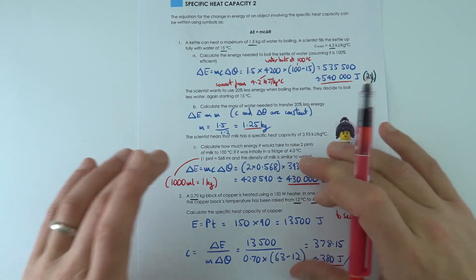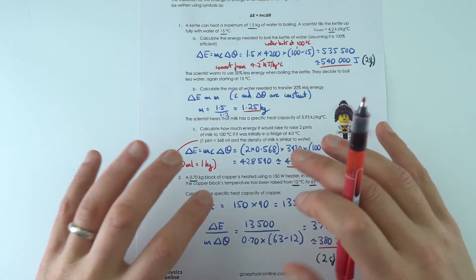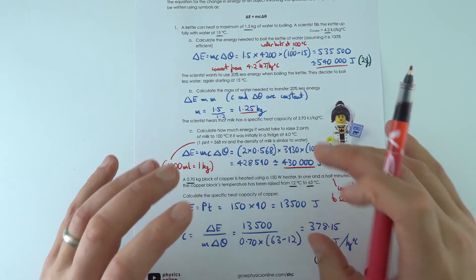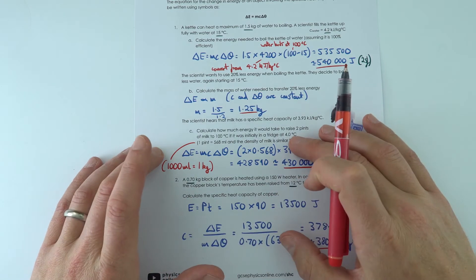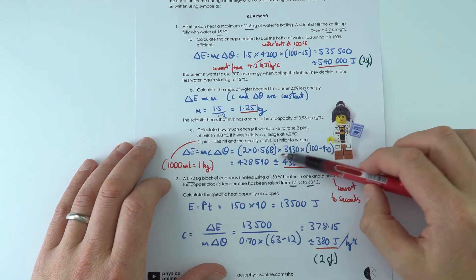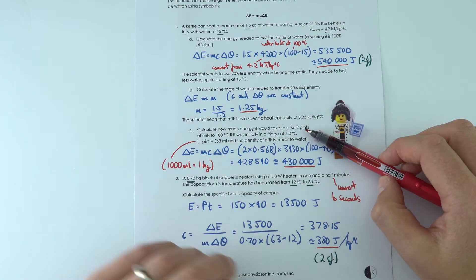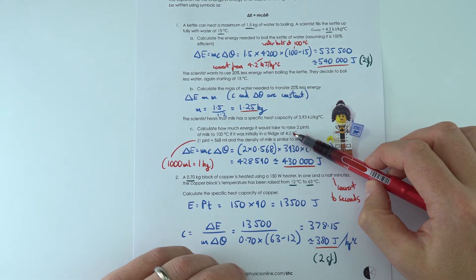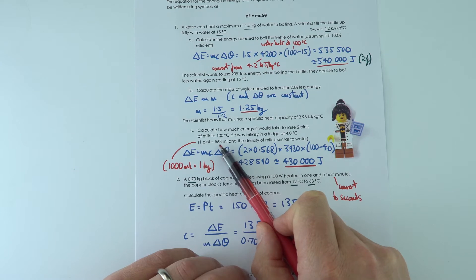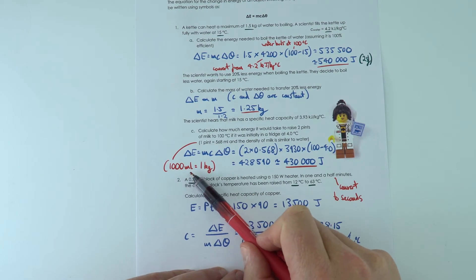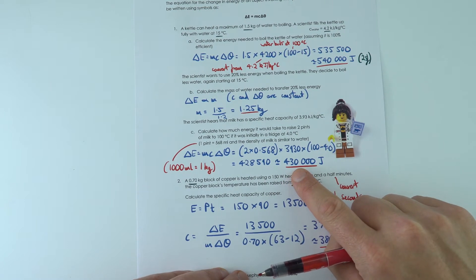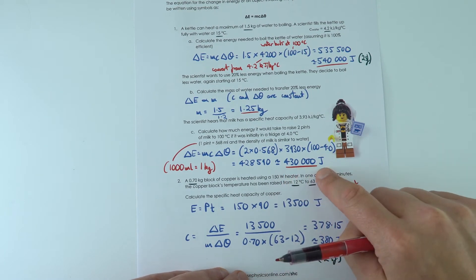This one here, please do not try at home. Yes, you can boil milk in a kettle, but the kettle will probably stink of milk afterwards and be very hard to clean out properly. This one looks at how much energy it would take to raise two pints of milk to 100 degrees if it starts in the fridge at 4. Using the data, converting one pint into milliliters, knowing that 1,000 milliliters is approximately equal to one kilogram, this gives a value of 430,000 joules.